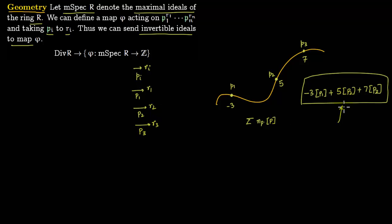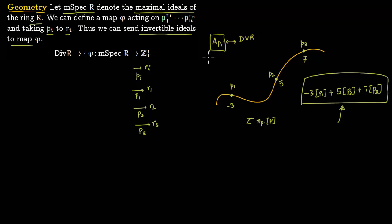Through this map one can recover divisors, and this correspondence is essentially how algebraic geometry arises. Points on the curve correspond to prime ideals; at each point there is a stalk, and in a Dedekind domain each localization at a prime ideal is a discrete valuation ring. This gives a very concrete description of the stalk at each point, which is why many books prove Riemann-Roch by starting from the fact that localizing at a prime gives a discrete valuation ring.